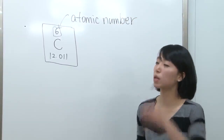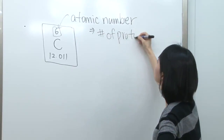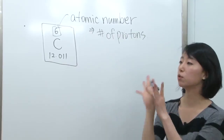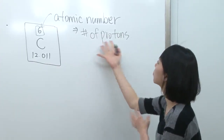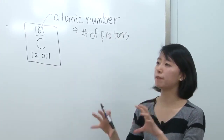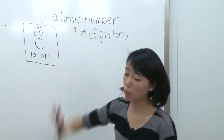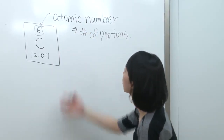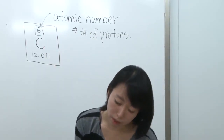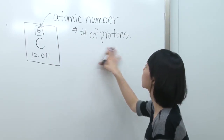The atomic number is the number of protons inside the atom. Inside the nucleus there are two particles: neutrons and protons. The number of protons is a very unique characteristic of an atom — so atomic number alone tells you what atom it is. Atomic number six is always carbon, atomic number seven is always nitrogen. So number of protons equals atomic number.